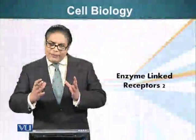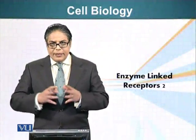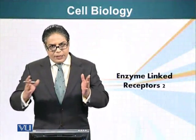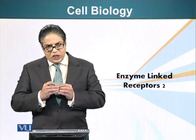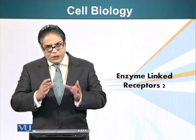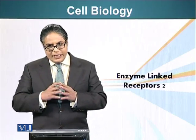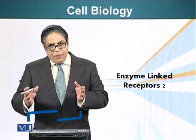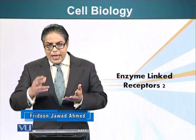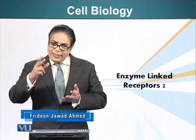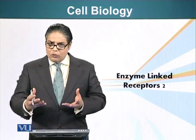When enzyme-linked receptors bind their ligand, there is a conformational change. These two receptors come together, and because of that conformational change, the two kinase domains of these receptors cross-phosphorylate each other. They have weak kinase activity initially, but when they are phosphorylated, their kinase activity enhances and they phosphorylate the receptor at other additional locations, creating more phosphate domains.